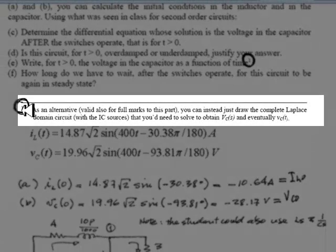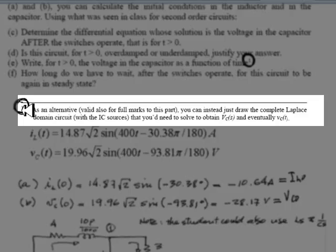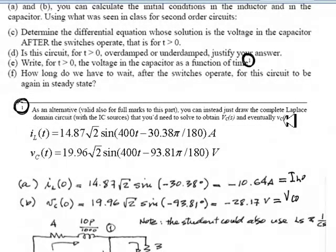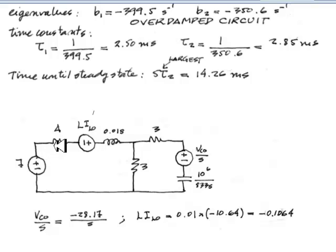But there is a little footnote that says, as an alternative, which is valid for full marks to this part, you can instead draw the complete Laplace domain circuit, including the initial condition sources that you would need to solve and obtain Vc(s) and eventually Vc(t). Let's do it this way, which is easier first, and then we will do it the hard way.